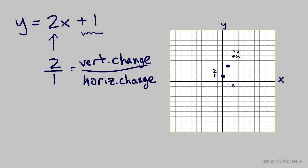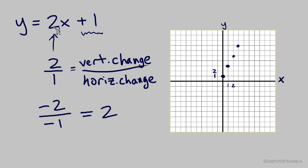We can do this over and over to find additional points on the line. It's also helpful to remember that positive 2 can also be written as negative 2 over negative 1, because negative divided by negative is still a positive. Since it's a positive 2, two negatives will still equal a positive, and that helps us see how the points can go the opposite direction. Now our vertical change is down 2 and the horizontal change is to the left 1, finding another point on the line.